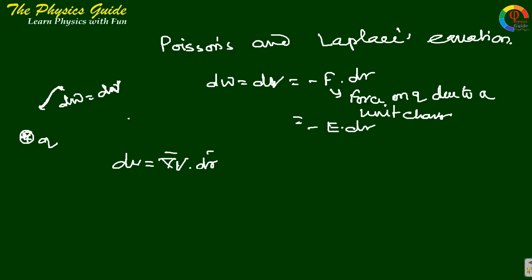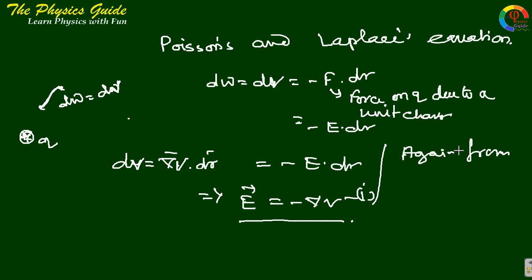So grad V equals dv. Again, this also from our equation minus E dot dr, so we can conclude E equals minus grad V. This is equation one. Again from the differential equation of Gauss's law...